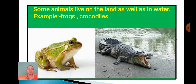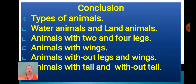But some animals live on land as well as in water. For example, frogs, crocodile, snake, turtle, crab, and so on. The conclusion of the period is: types of animals on the basis of water animals and land animals.